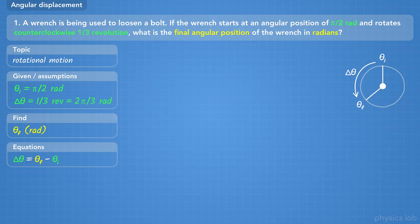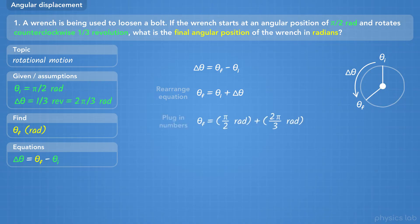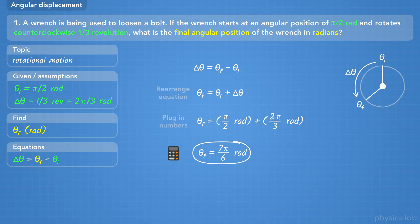Now we can start with our equation. We rearrange it to isolate theta final, then plug in the numbers: pi over 2 radians for theta initial, and 2 pi over 3 radians for the angular displacement. When we add those together, we find that the final angular position is 7 pi over 6 radians.